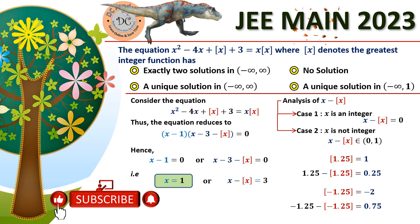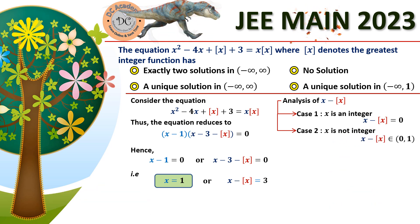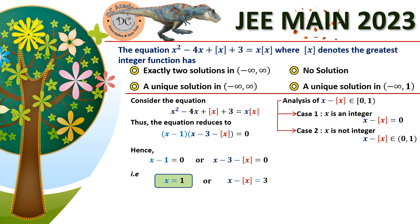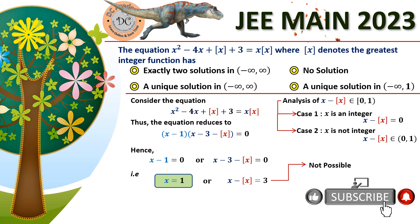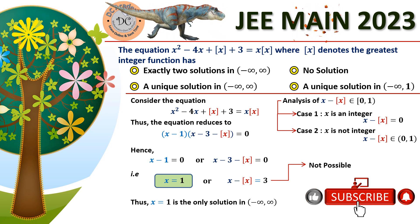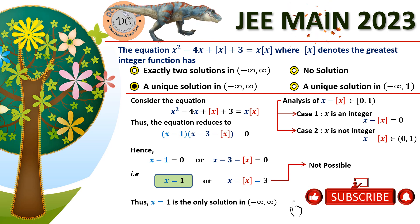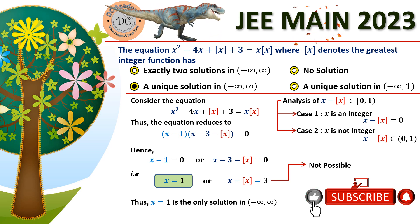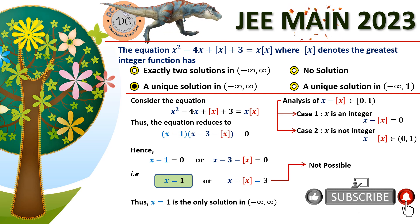Therefore, x minus box(x) equal to 3 is not possible for any real value of x. The equation has only one solution: x equals 1. So option C is correct — the given equation has a unique solution in (minus infinity, plus infinity).